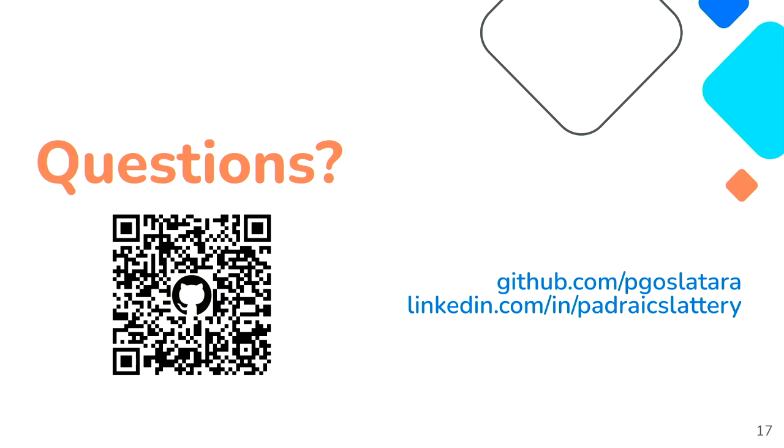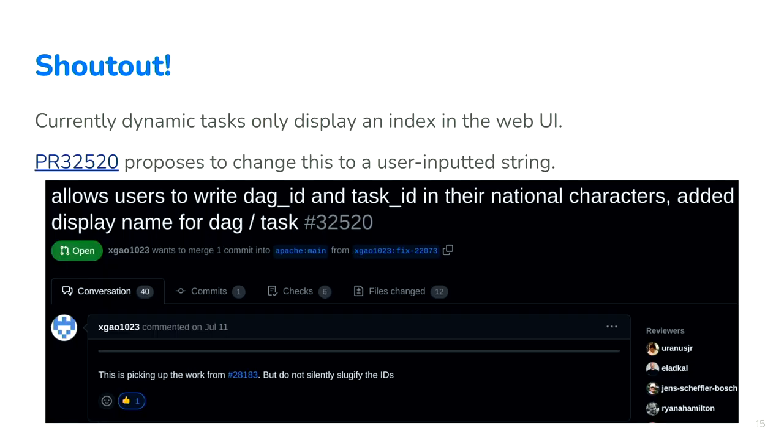A comment from the audience: great presentation, great background on DBT. On the dynamic task map index naming issue — has anyone looked at the Airflow code to see if it's possible to provide a name-to-number mapping? The speaker references the active PR. This PR will allow a display name for each dynamically generated task, so you'll see a display name of your choosing rather than just zero, one, two. Shout out to Vincent who's working on it — it currently only has one thumbs up. The speaker urges everyone to give it a thumbs up, since that's how priority is decided. Thank you — let's give him a round of applause.